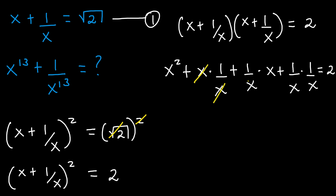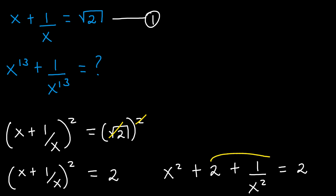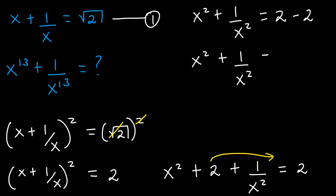Now x times 1/x will cancel, and 1/x times x will cancel as well. And so we shall have x to the power of 2 plus 1 plus 1 plus 1 divided by x to the power of 2 equaling to 2. This becomes x to the power of 2 plus 2 plus 1 divided by x to the power of 2 equaling to 2. Taking 2 to the right-hand side, we get x to the power of 2 plus 1 divided by x to the power of 2 equals 2 minus 2, which is 0.